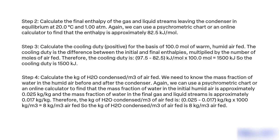Step 4: Calculate the kg of H₂O condensed per m³ of air fed. We need to know the mass fraction of water in the humid air before and after the condenser. Using a psychrometric chart or online calculator, the mass fraction of water in the initial humid air is approximately 0.25 kg/kg and in the final air is 0.17 kg/kg. Therefore, the kg of H₂O condensed per m³ of air fed is (0.25 − 0.17) × 1000 = 8 kg/m³ of air fed.